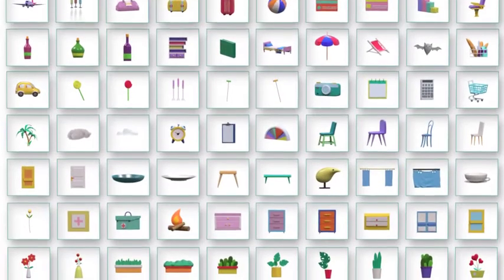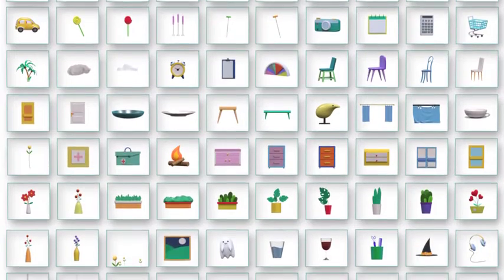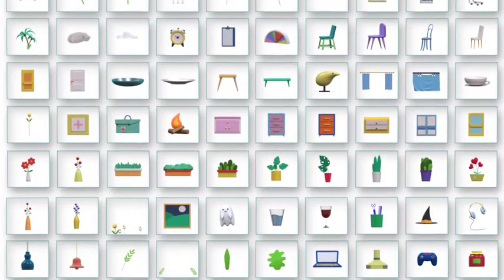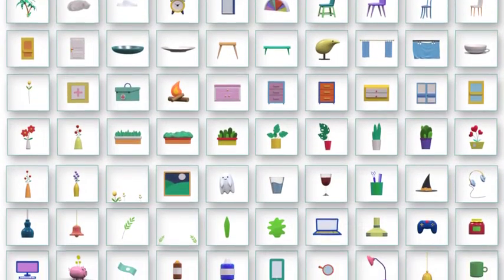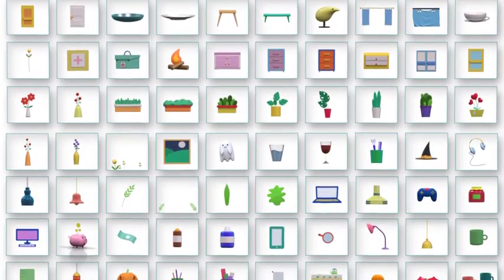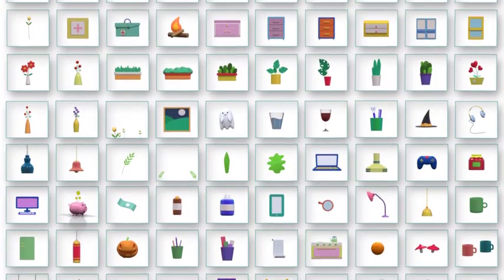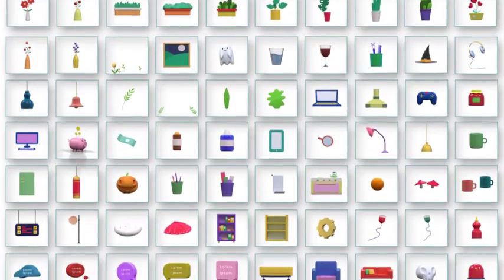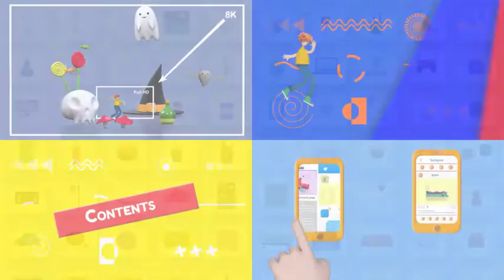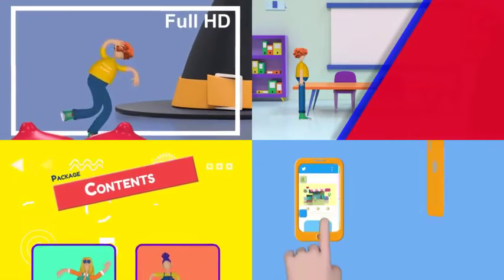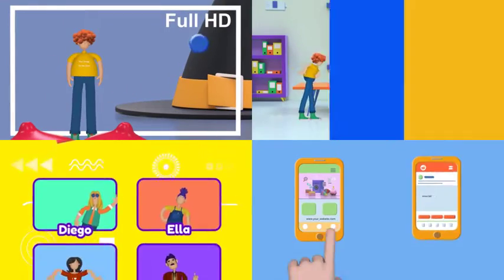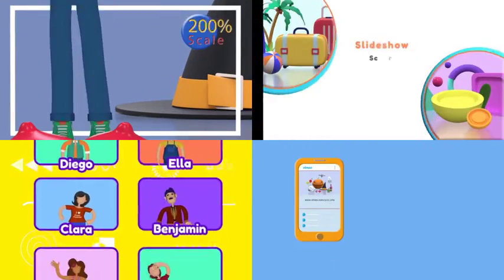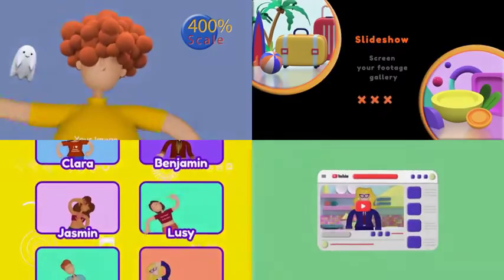You can find any 3D rendered objects about nature, technology, office decorations, finances, travel, and many more. This package is a child pack of BriskLand 3D Explainer Toolkit.